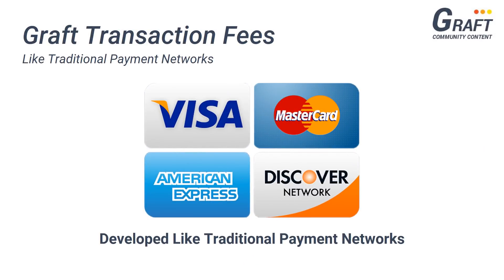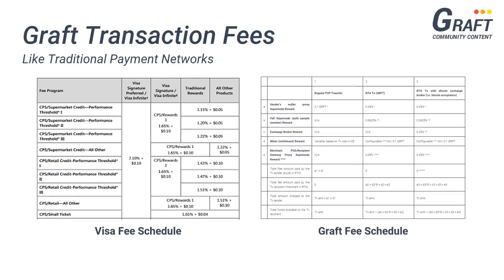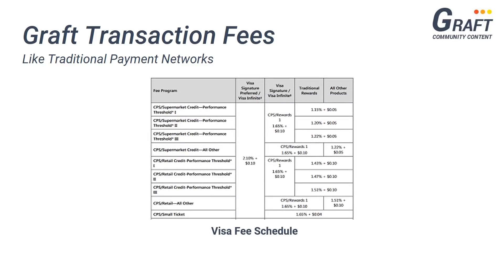Now as many of you already know, the Graft payment network is being developed to resemble and work very similar to traditional payment networks. This means that like traditional payment network fees, the overall Graft transaction fee is comprised of various small fees, which are paid for by the merchant and awarded to network participants that help process a transaction. In order to understand all the various Graft transaction fees, let's first take a look at how traditional payment network fees are structured through a visual example, and explore how each participant on these networks are awarded.